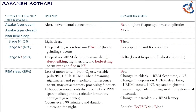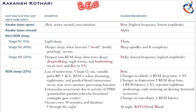When a person is awake with eyes open, they are alert with high mental concentration. The EEG — electroencephalogram, an instrument used to measure sleep pattern waves — shows beta waves when a person is awake with eyes open. Beta waves are high frequency and low amplitude. People with eyes closed but mentally awake produce alpha waves.